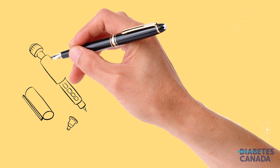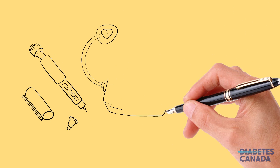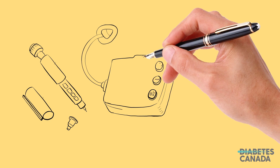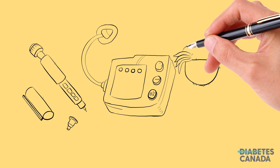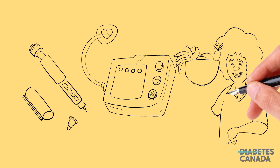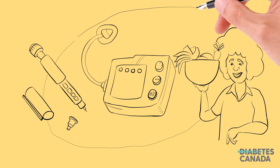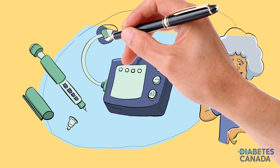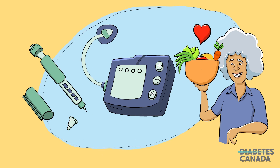People living with type 1 diabetes require insulin to live, which can be administered through injections or a pump. Healthy behaviors, monitoring, education, and support are also key to the management of type 1 diabetes.